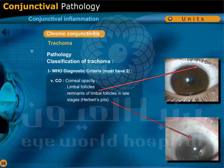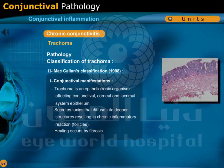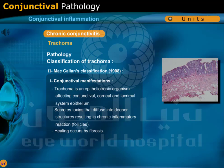Vascular pannus is an inflammatory pannus destroying Bowman's membrane. Limbal follicles, remnants of limbal follicles in late stages, are called Herbert's pits. Another classification is MacCallan's classification of 1908. Trachoma is an epitheliotropic organism affecting conjunctival, corneal, and lacrimal system epithelium. It secretes toxins that diffuse into deeper structures resulting in chronic inflammatory reaction appearing as follicles. Healing occurs by fibrosis.